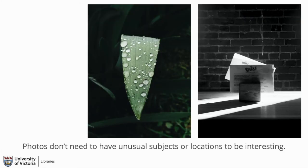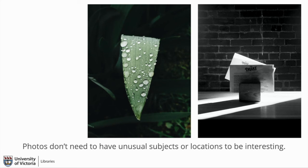Photos don't need to have unusual subjects or locations to be interesting. The image on the left is simply a leaf on a plant in my front yard that I noticed coming home one day. As usual, I tapped on the leaf to focus it, dragged down the exposure so it was properly exposed — which dropped the background into shadow. It took me seconds to take this photo and it became one of my most popular ones, with a couple of people asking to have it printed for their homes. The one on the right is a simple moment — just an interesting combination of lines, shadows, and light.